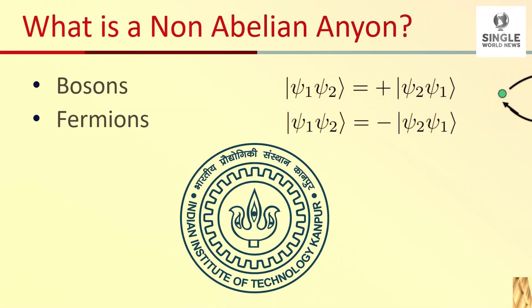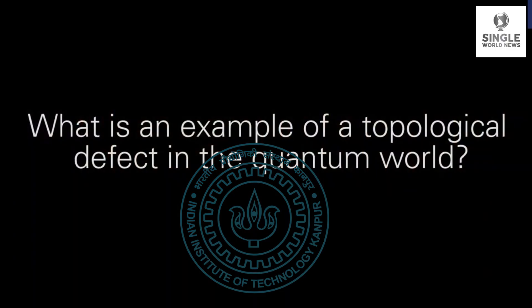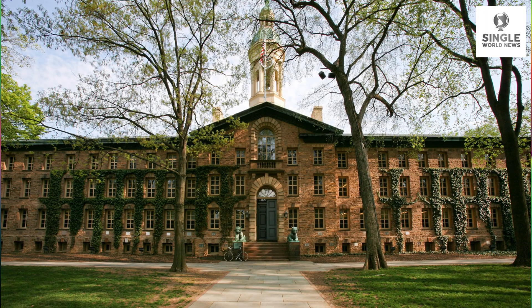Theoretical physicists like Ashwin Vishenath do not like to limit themselves to just our world — in a 2D setting, for instance, all kinds of new particles and states of matter become possible. Ashwin earned his undergraduate degree from IIT Kanpur in 1996, completed his PhD from Princeton University in 2001, and did his postdoctoral fellowship from MIT.